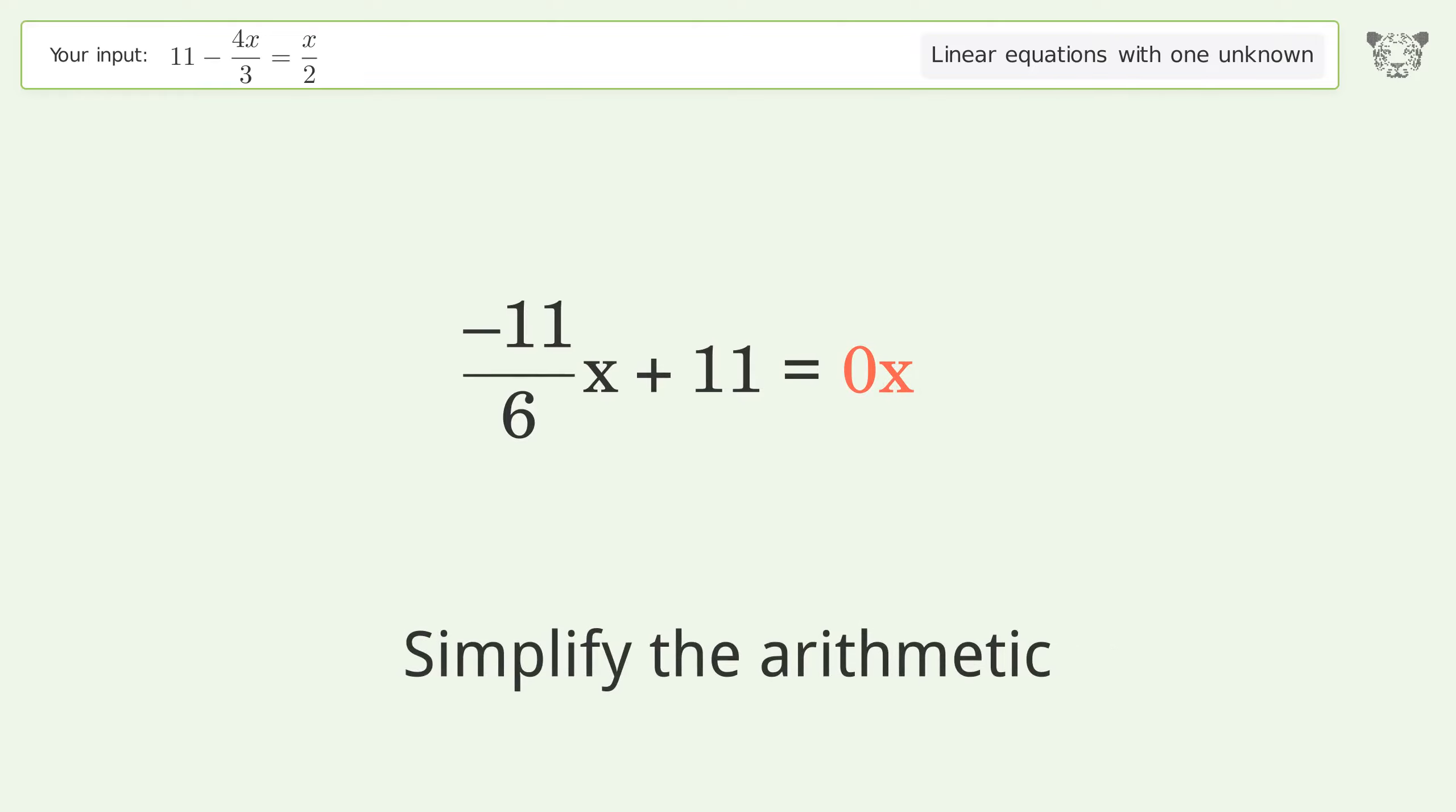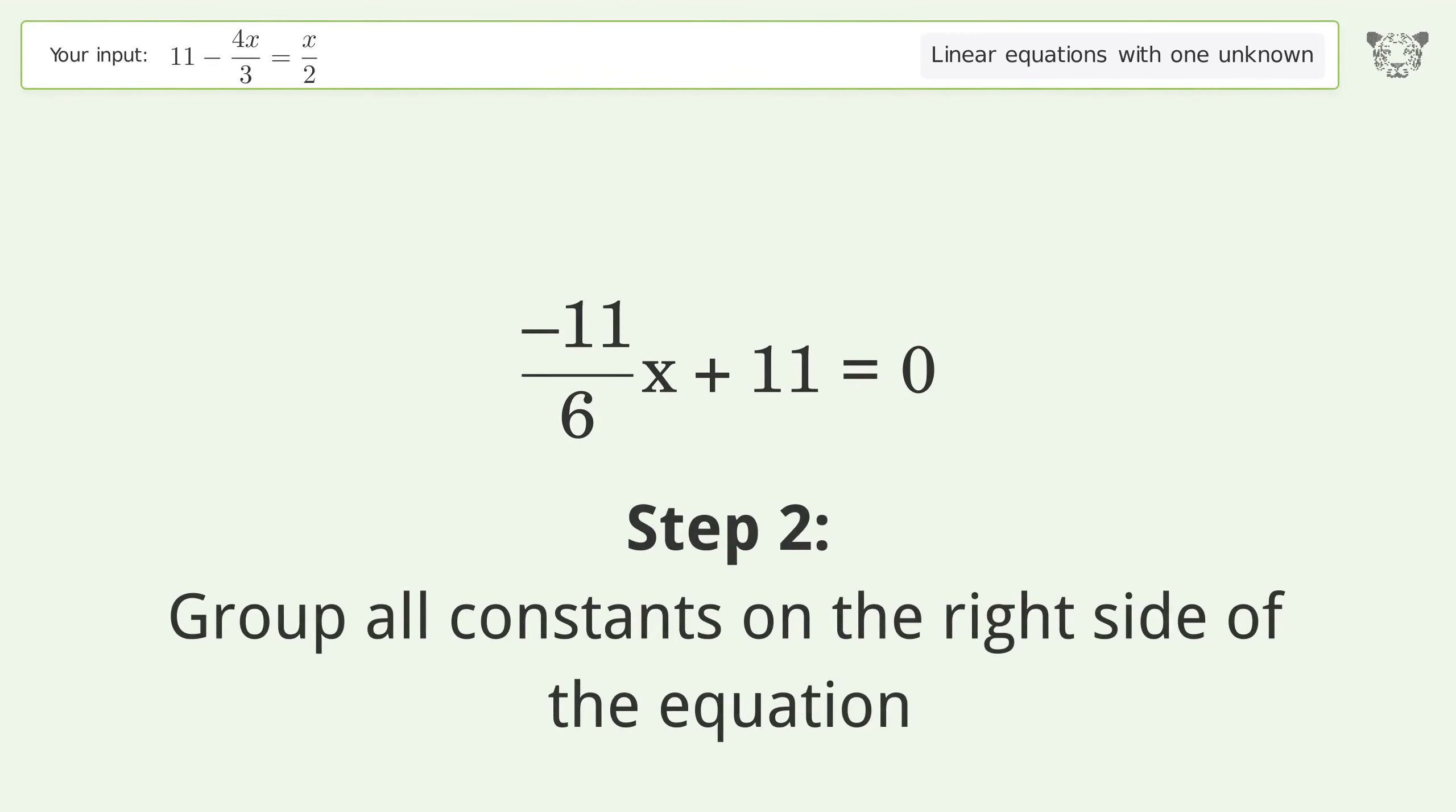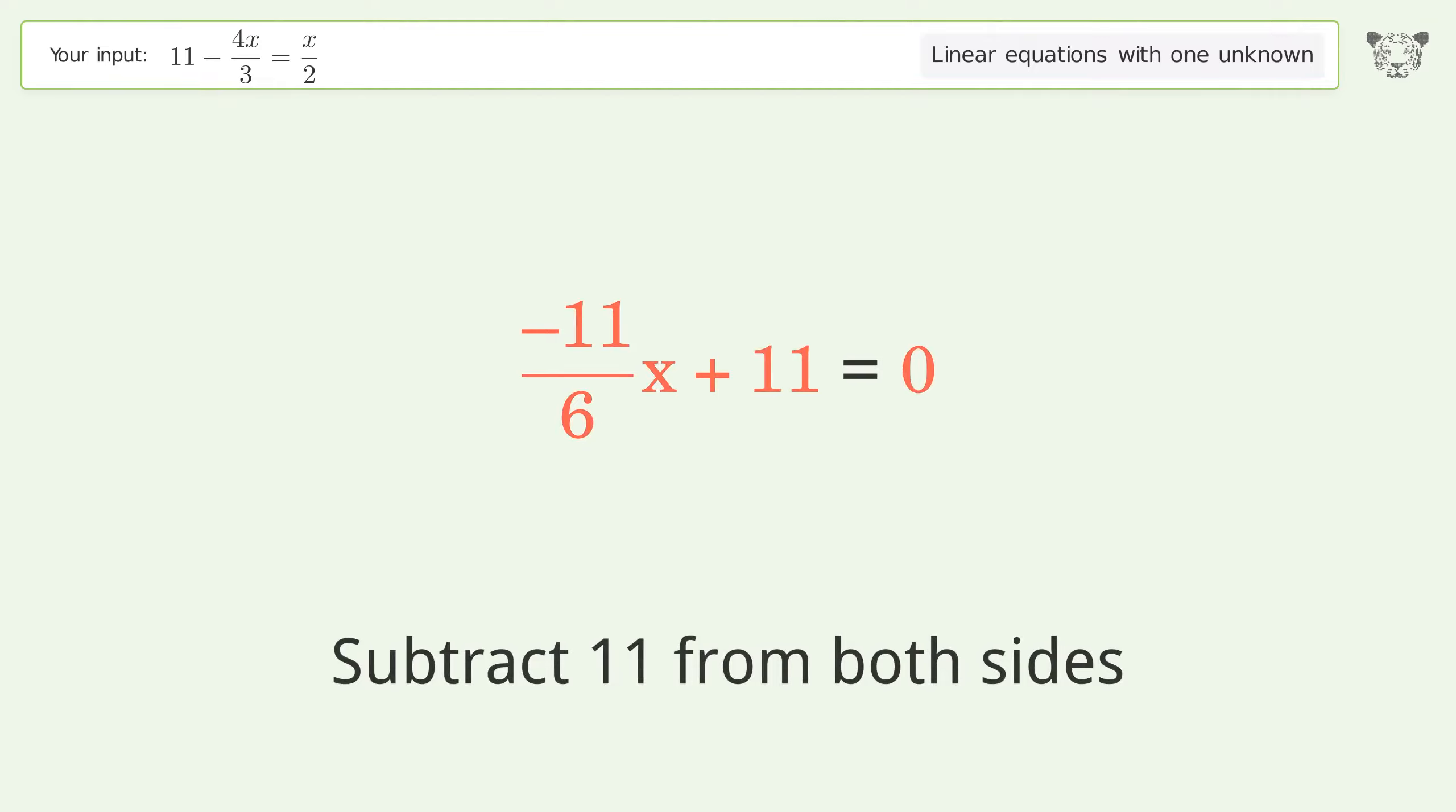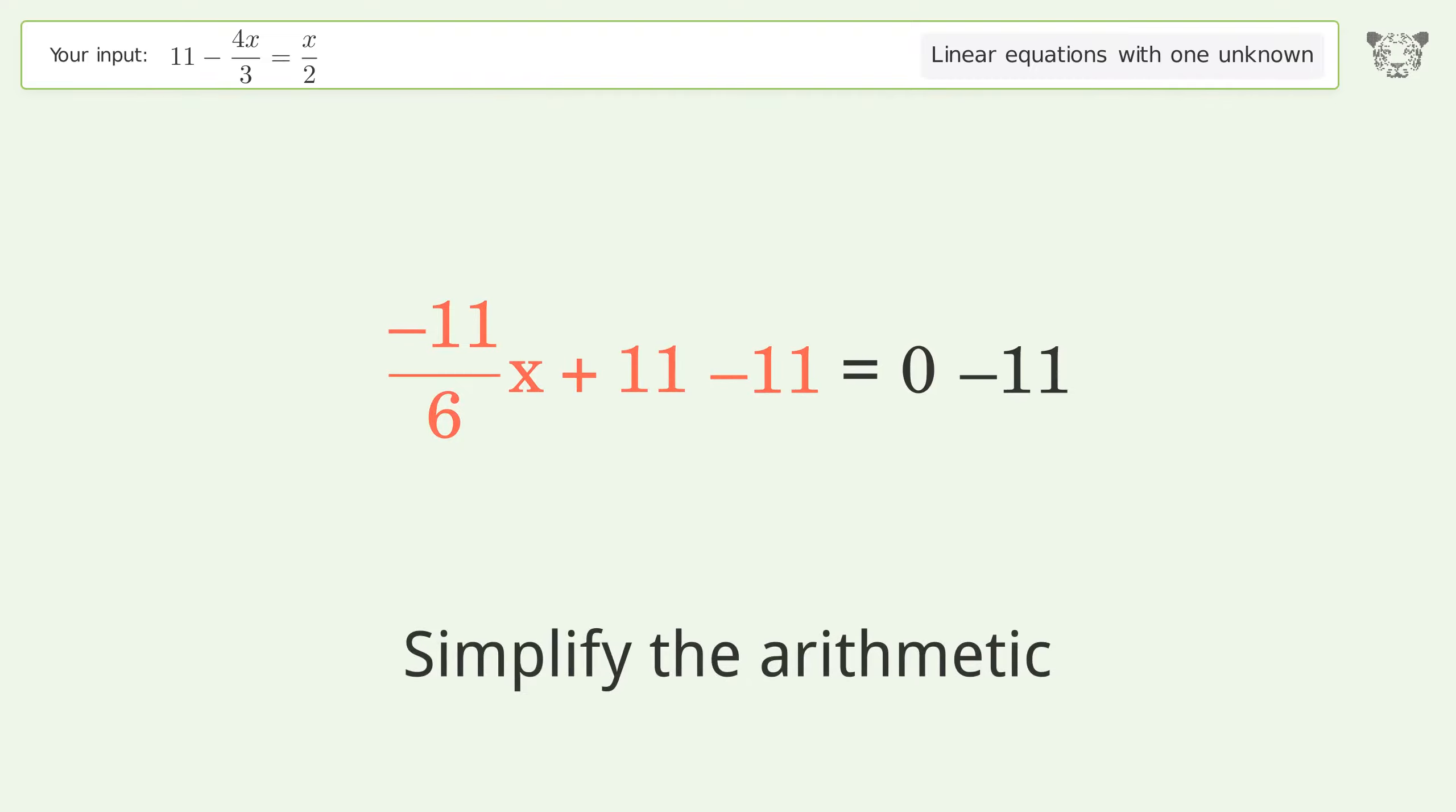Simplify the arithmetic. Group all constants on the right side of the equation. Subtract 11 from both sides. Simplify the arithmetic.